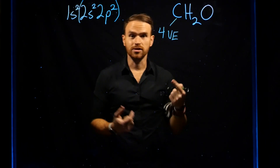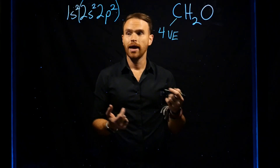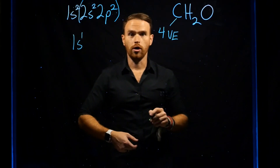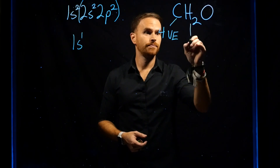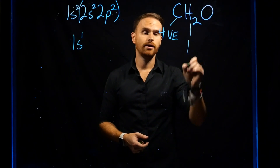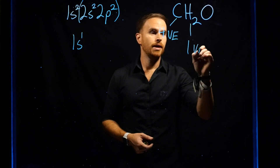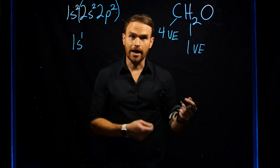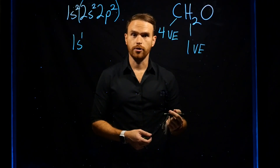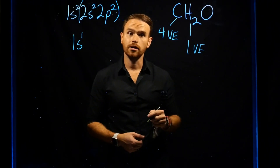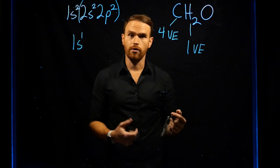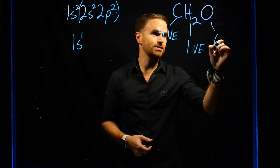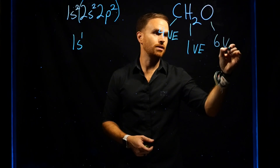Hydrogen is the first atom on the periodic table and its electron configuration is 1s1, so each hydrogen has one valence electron. If you look for oxygen, you see that it's the eighth element on the periodic table, or the sixth element on the second row. This means that oxygen has six valence electrons.